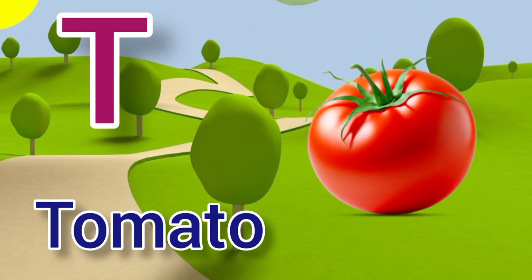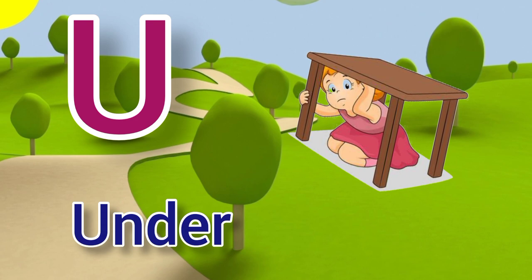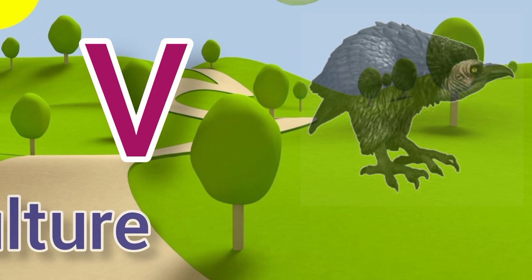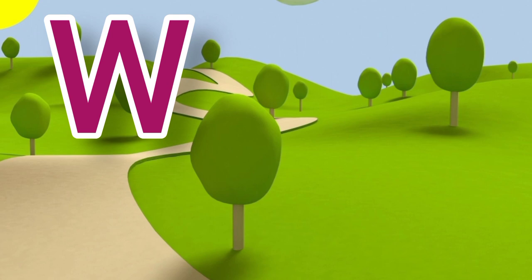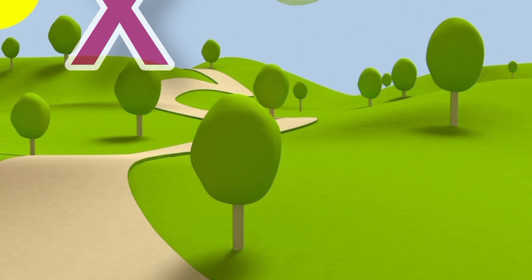U for under, under means neechi. V for vulture, vulture means ghosla. W for watermelon, watermelon means tarbooj.